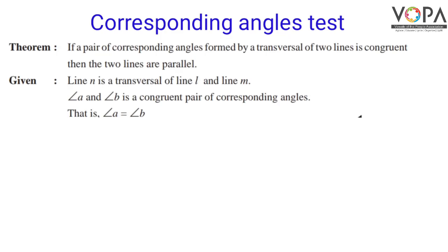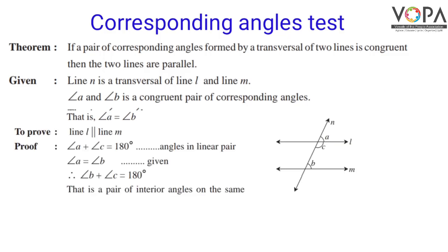Corresponding angles test: if a pair of corresponding angles formed by a transversal of two lines is congruent, then the two lines are parallel. We are given that line N is a transversal of line L and line M, and angle A and angle B are a congruent pair of corresponding angles, that is angle A is equal to angle B. We have to prove that line L is parallel to line M.